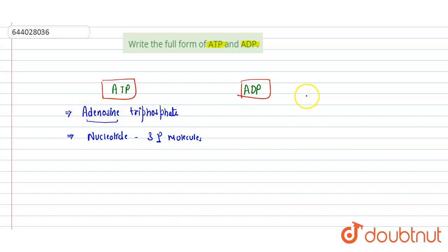Now let's see ADP. ADP is adenosine diphosphate. It is again a nucleotide, not a nucleoside. Both are nucleotides, but the difference is that ADP contains only two inorganic phosphate molecules instead of three.